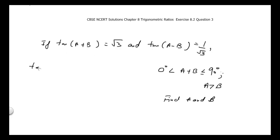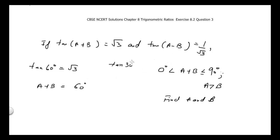We know that tan(60°) = √3, so A + B = 60°. We also know that tan(30°) = 1/√3, so A - B = 30°.